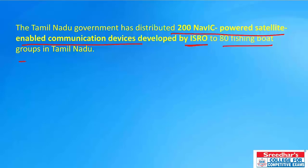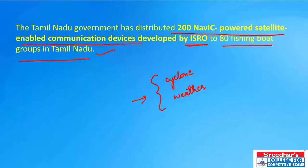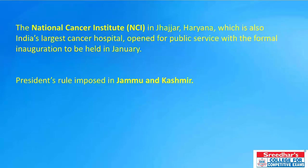The Tamil Nadu government has distributed 200 NavIC-powered satellite-enabled communication devices developed by ISRO to 80 fishing boat groups in Tamil Nadu. This gadget will help Tamil Nadu fishermen get cyclone and weather updates on a real-time basis, keeping them updated every second.